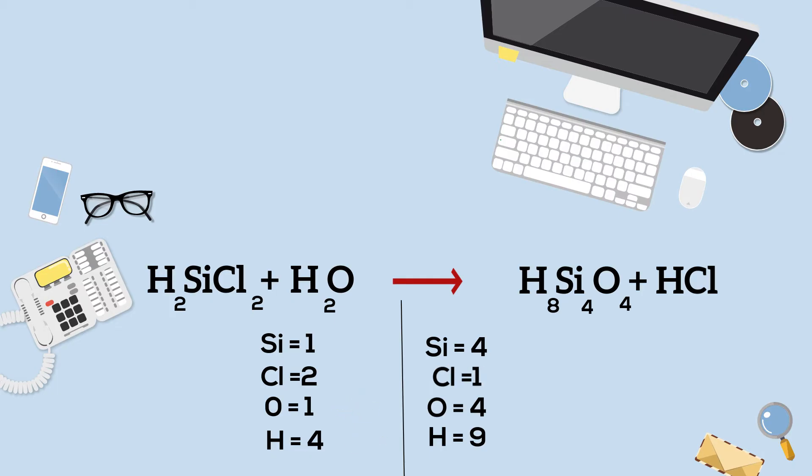I have four silicons, I have one chlorine, I have four oxygens and then I have nine hydrogens because I have one hydrogen in the HCl.